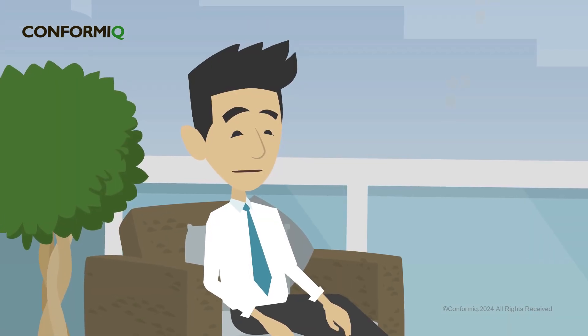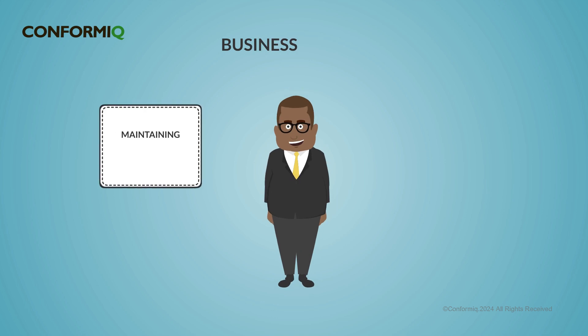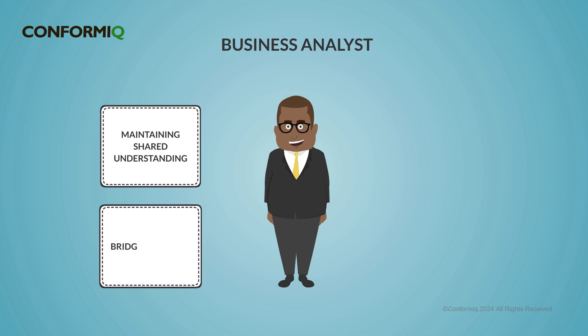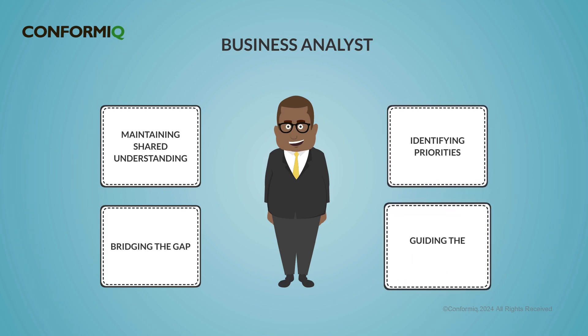BA or product owner plays an important role. They are responsible for maintaining shared understanding within the team and bridging the gap between business needs and technical implementations, ensuring everyone comprehends the requirements. Most importantly, they identify business priorities and guide the team to focus on the most important functionalities or features.